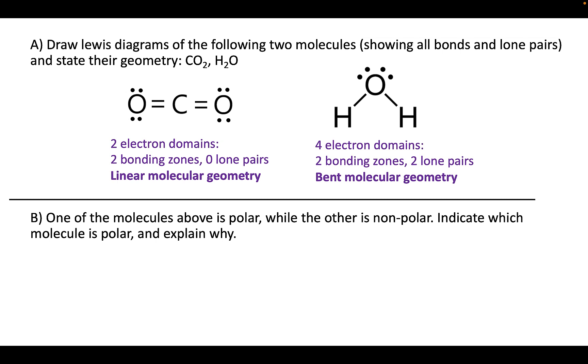For part B we want to determine, well, one of these is polar while the other is non-polar, and we want to determine which and explain why. When we look at these we want to look at the bonds. When we have different atoms bonded to one another, we generally speaking have an unequal sharing of electrons, which is determined by the electronegativity.